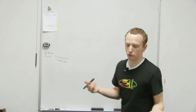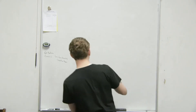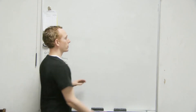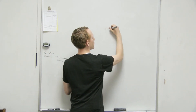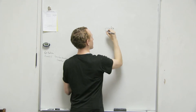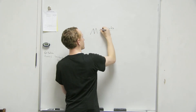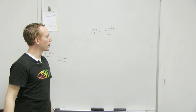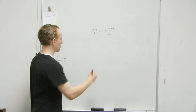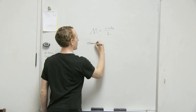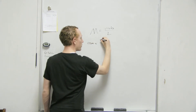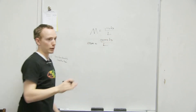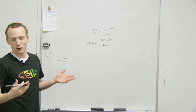So osmolarity is the measurement of particles in a concentration. There's a difference between molarity, which is moles per liter, and osmolarity, which is osmols per liter — which probably doesn't make sense because you've never heard of the term osmols.